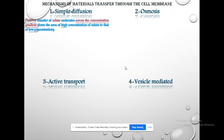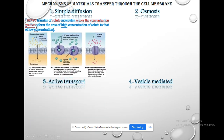Simple diffusion — if we look at the definition, it is the passive transfer of solute molecules across the concentration gradient. It is very important to concentrate on the things labeled in red. Simple diffusion is passive, meaning it occurs autonomously or spontaneously.